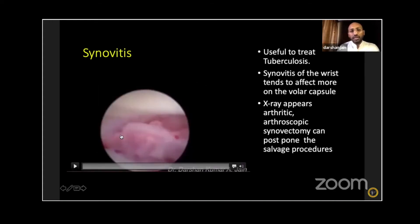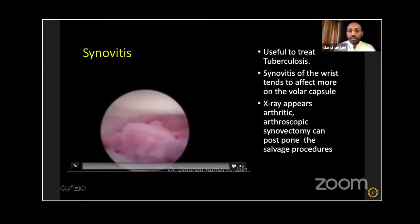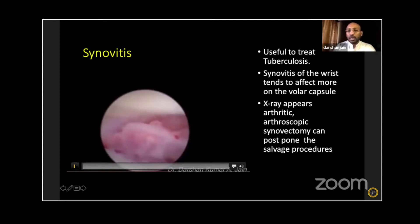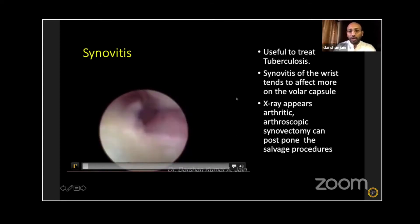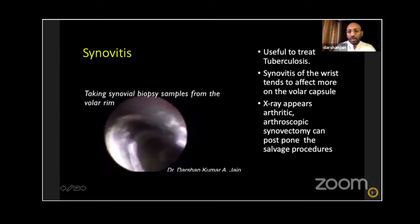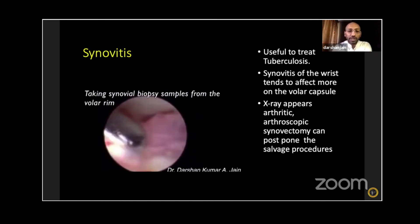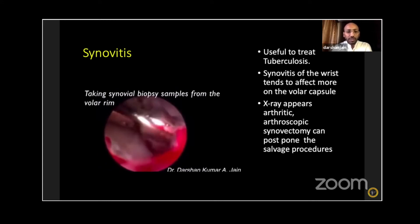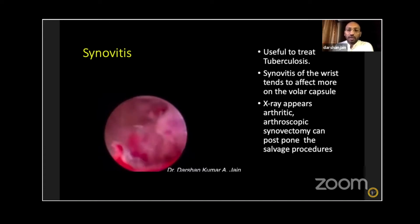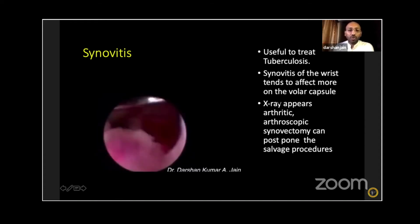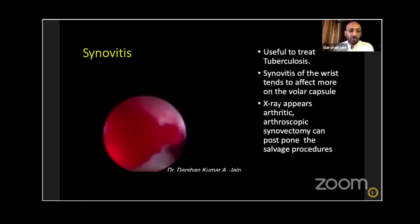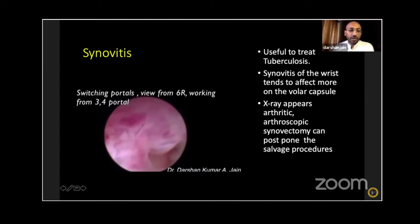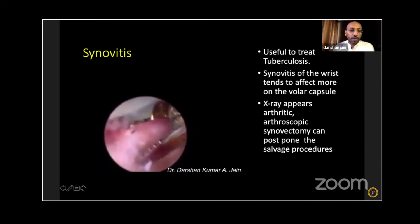Moving on from TFCC, another condition is synovitis, which is quite useful to assess in cases of tuberculosis or rheumatoid arthritis at an early stage, or even after six months of medical treatment if symptoms are not abating. Arthroscopic synovectomy helps quite a lot. Surprisingly, X-ray sometimes shows a lot of arthritis and derangement, but when you visualize arthroscopically the cartilage can be quite good. Synovitis tends to affect more the volar capsule and the ulnar side.